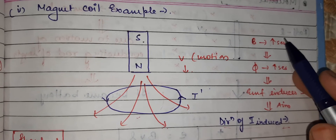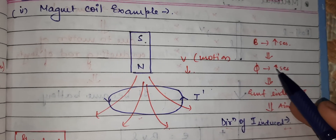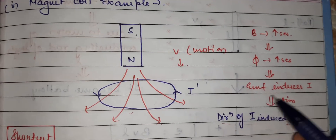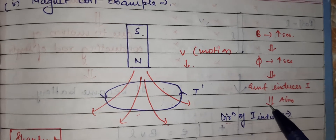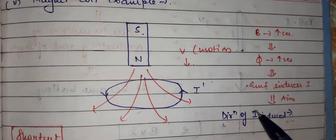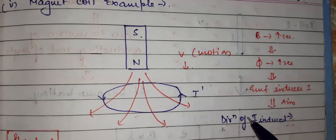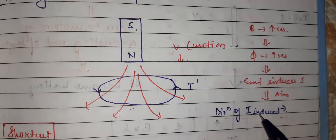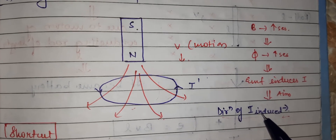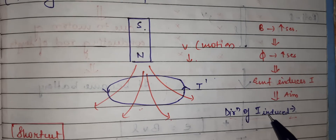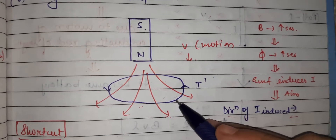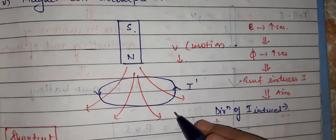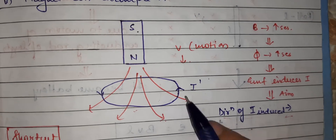As the magnetic field lines through the loop increase, the flux will increase. When flux increases, an EMF will be induced and a current will flow. The aim of that induced current is to decrease the magnetic field lines crossing through that area. To decrease those field lines, a current must be induced in the anticlockwise direction. Viewing the loop from the top, the current flows anticlockwise.